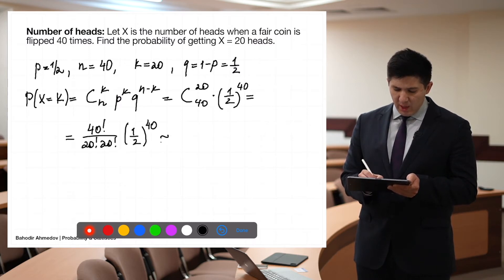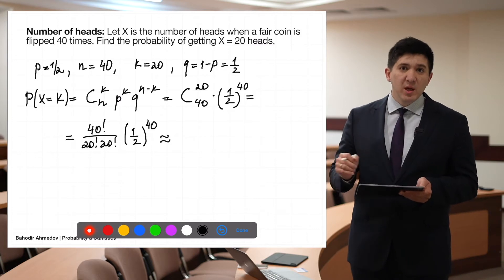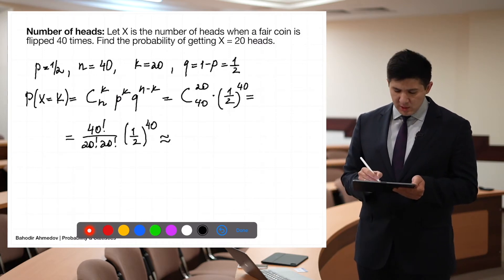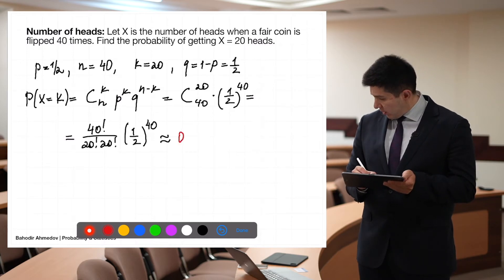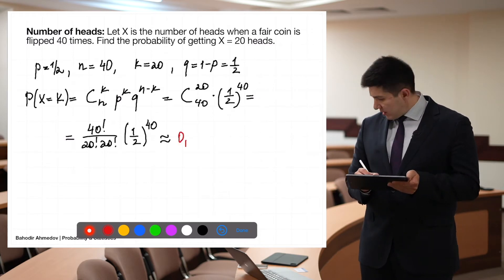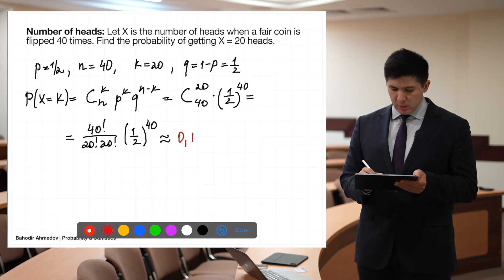Using a calculator to perform all these calculations, the exact binomial answer is 0.1254.